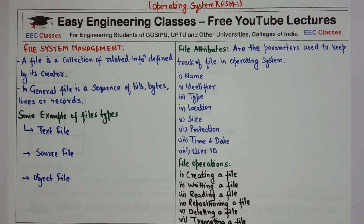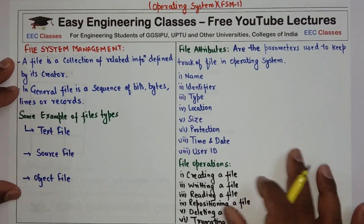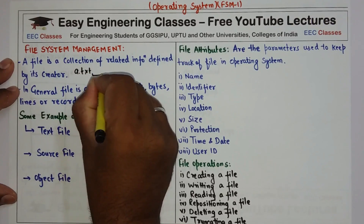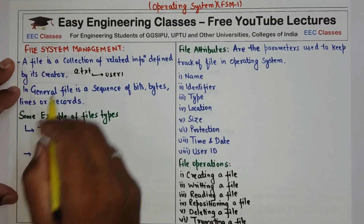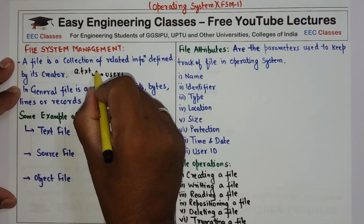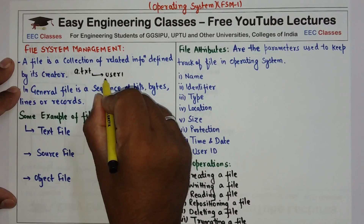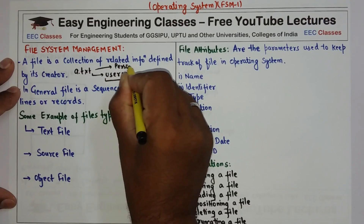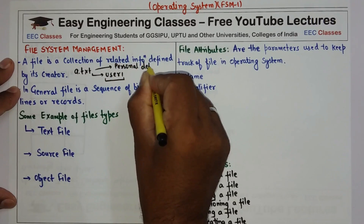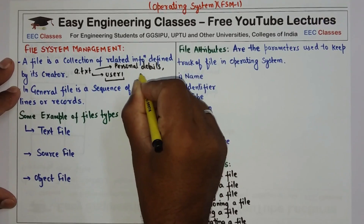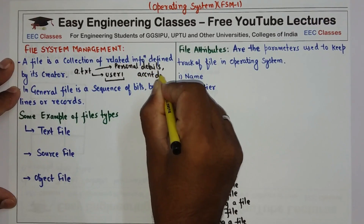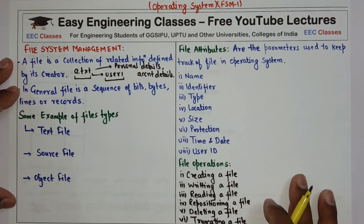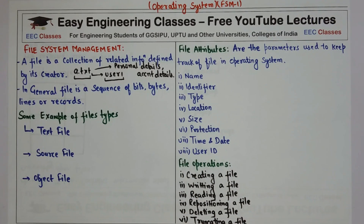What is a file? A file is a collection of related information defined by its creator. For example, if I have a file called 'a.txt' created by user one, then 'a.txt' is a collection of related information defined by its creator, user one. This file can contain information like personal details or account details of the user.